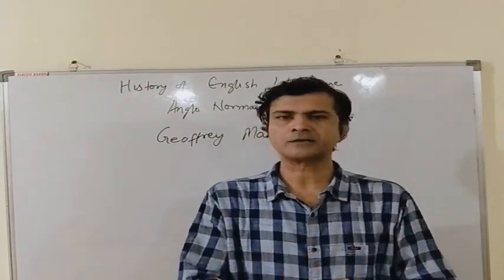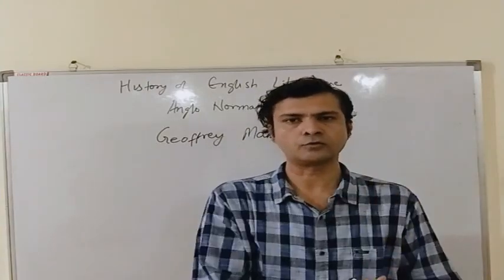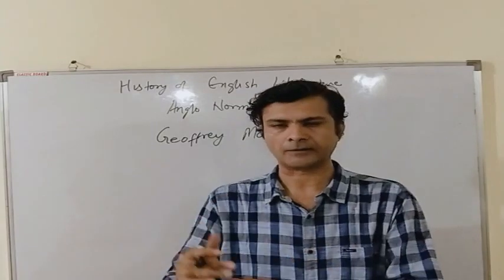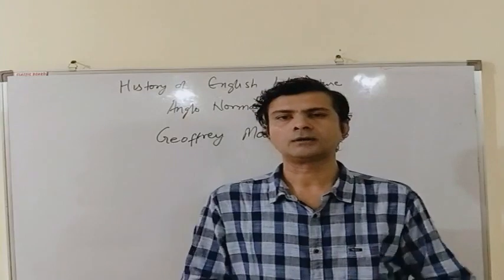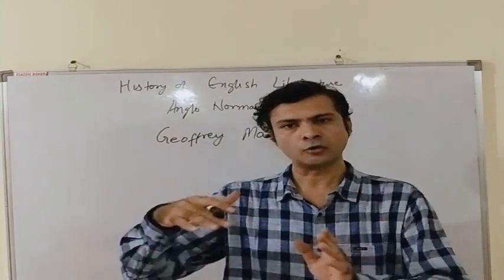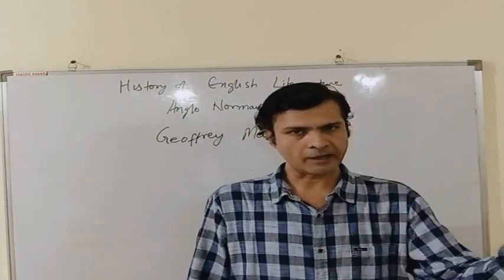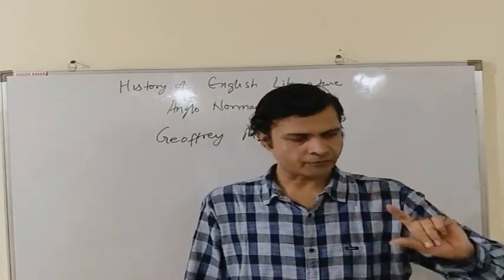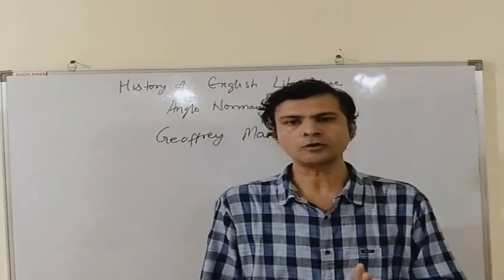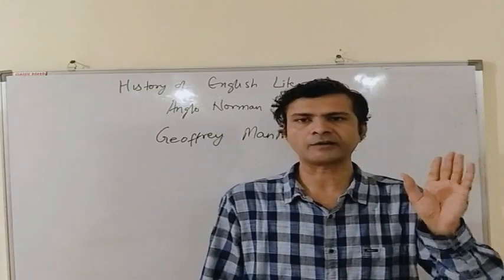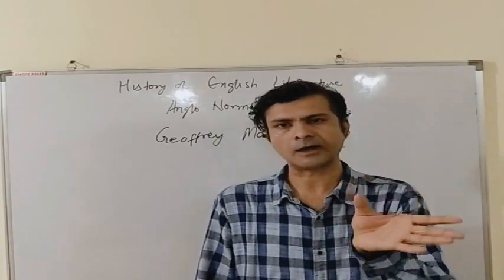So far we have discussed four main poets of the Anglo-Norman period. The first was Geoffrey Malmoth who wrote Historia Regum Britannia. The second was Wace who wrote Roman de Brut. The third was Layamon who wrote Brut — Geoffrey Malmoth wrote in Latin, Wace wrote in French, and Layamon wrote in English. The fourth poet is the Pearl poet or Gawain poet, whose actual name we do not know, but whose four poems are very popular and known in modern times because of the works of J.R. Tolkien.